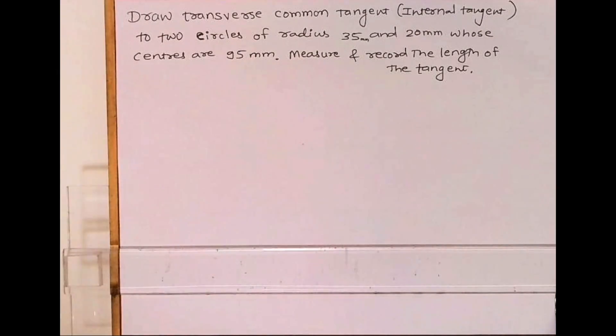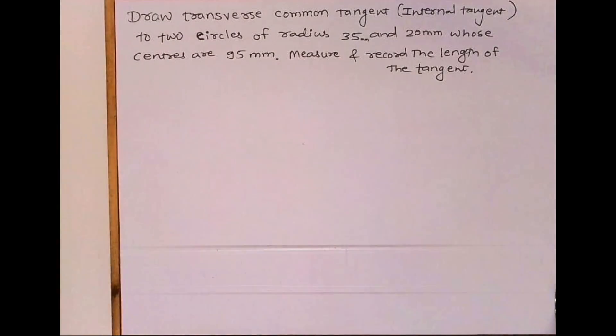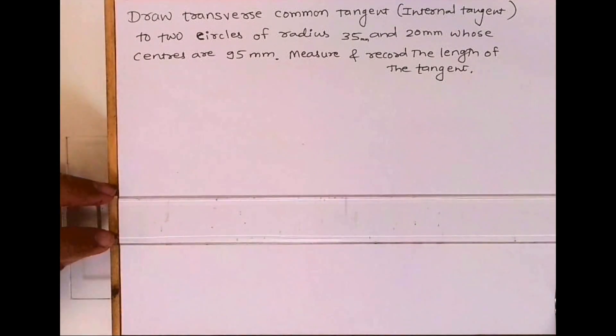Welcome to technical drawing. Today we learn how to draw transverse common tangent, also called internal tangent, to two circles of radius 35mm and 20mm whose centers are 95mm apart.